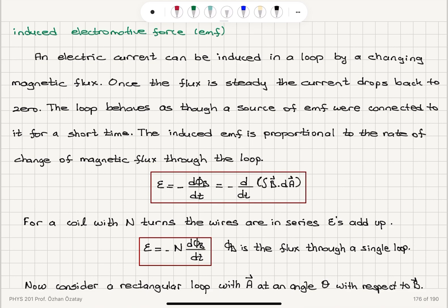This induced EMF is proportional to the rate of change of magnetic flux with a minus sign. And for wires connected in series with capital N turns, we have minus N dΦ_B/dt, where dΦ_B is the flux through a single loop.